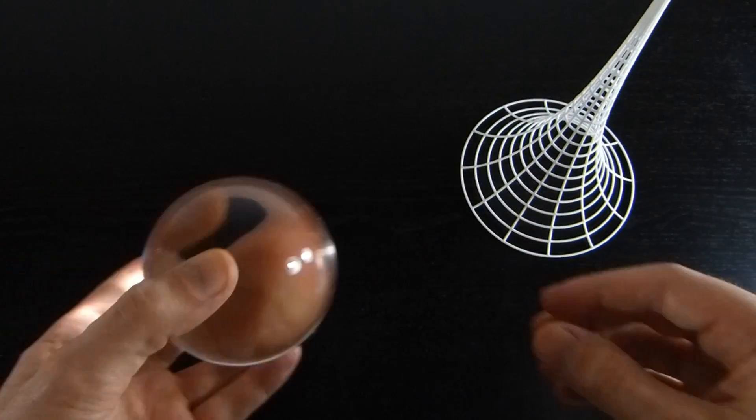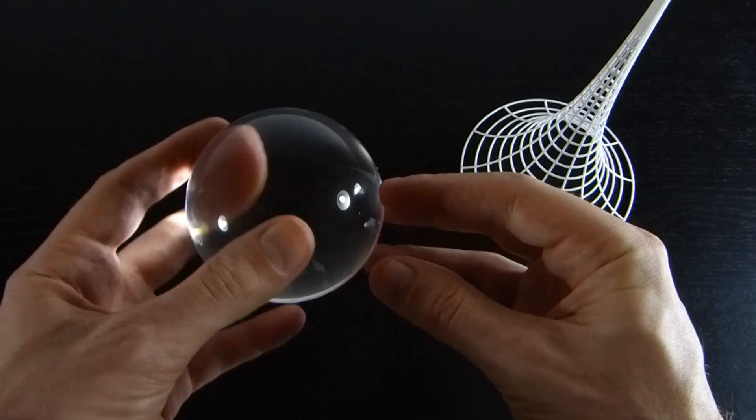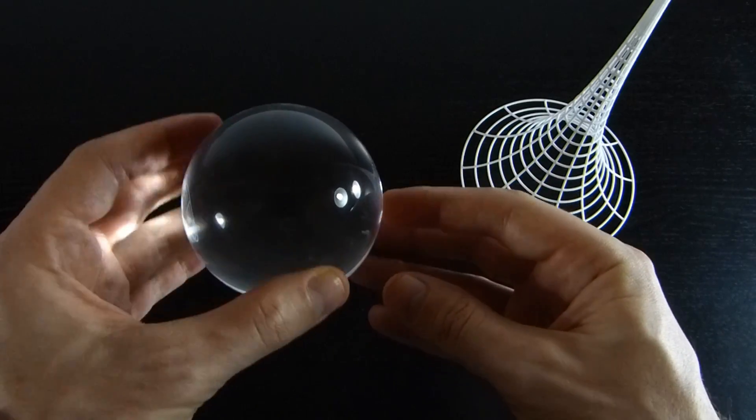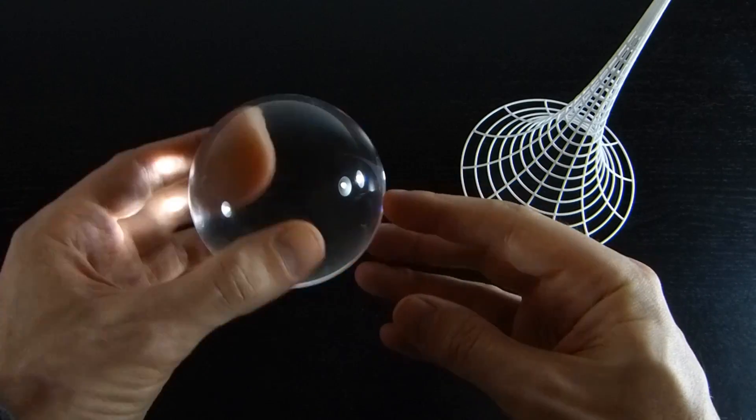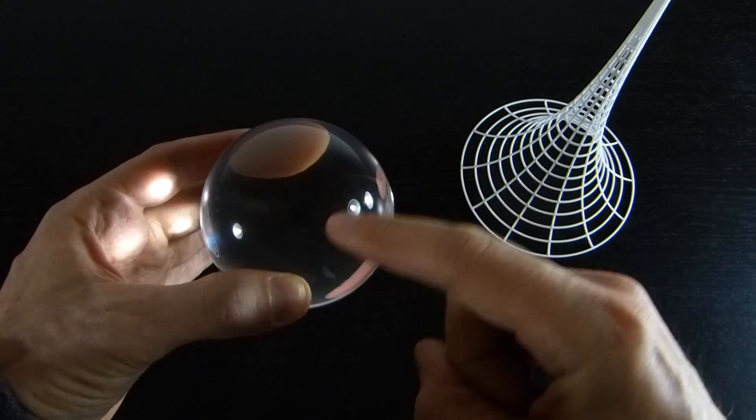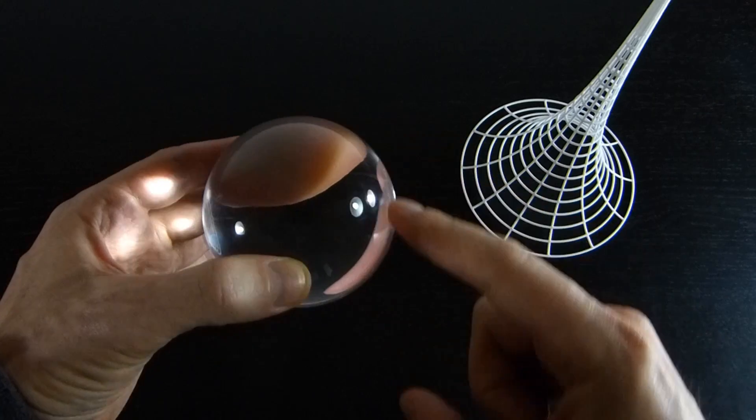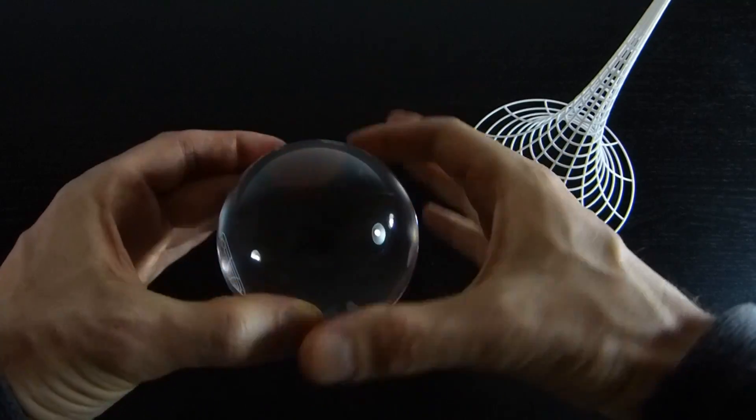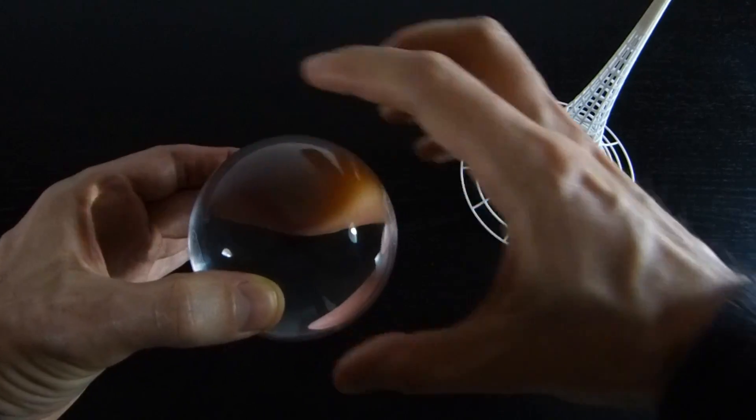So here's a sphere, and a sphere has a constant positive curvature. One way to talk about what curvature is: if you choose a point on the sphere and draw two lines at right angles through that point, you see that those two curves curve in the same direction. They both curve inwards towards the sphere.